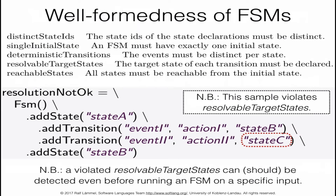Here is a list of well-formedness constraints for finite state machines. All state IDs of different state declarations should be distinct, otherwise we confuse states. There should be only one initial state. Transitions should be deterministic: for any given state and event, there should be at most one transition. All target states in transitions should be resolvable. And all declared states should be reachable from the initial state, otherwise we have dead code. For example, a finite state machine that mentions state C in a transition but never declares state C violates the resolvability constraint.